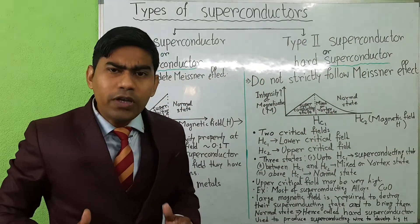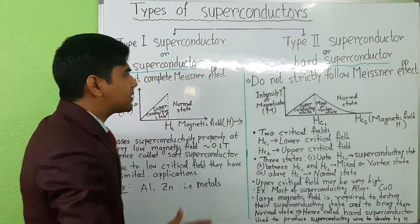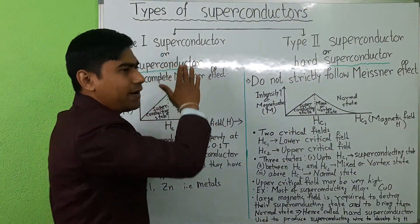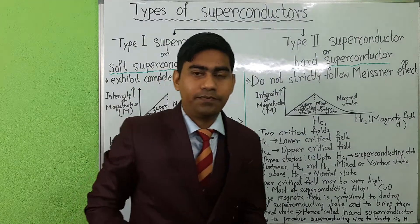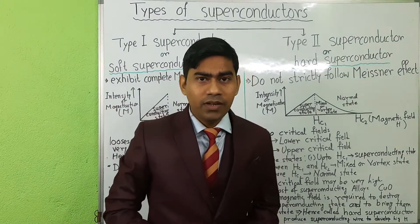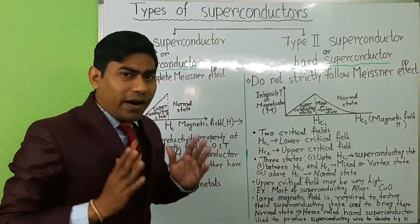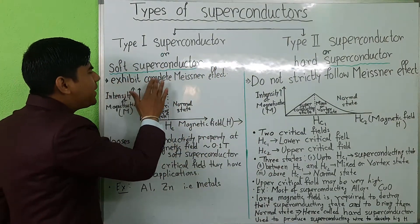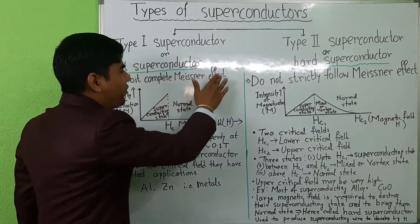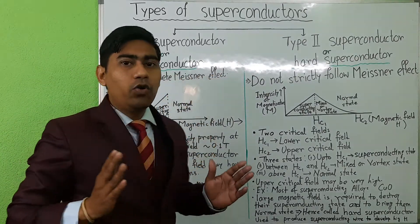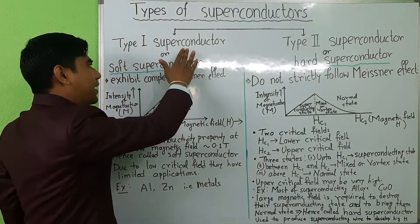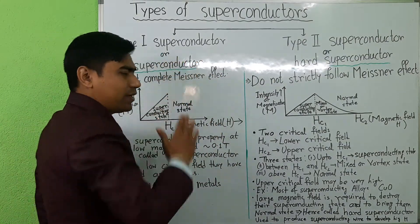We first discuss type 1 superconductors. Superconductors that exhibit complete Meissner effect are known as type 1 superconductors.